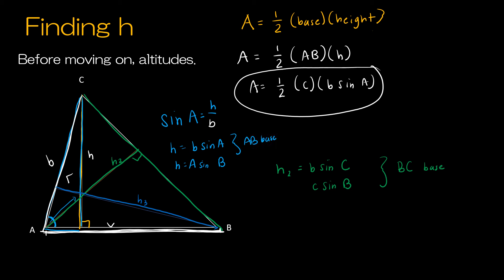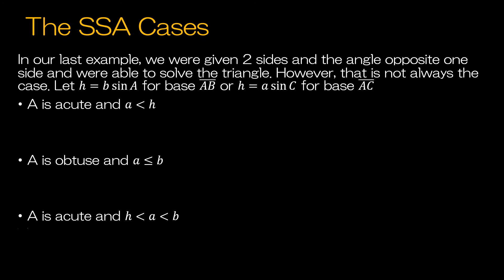Hopefully that gives us a good base to move forward. We're now going to look at some examples of side-side-angle that don't work, and of course finding the area of triangles. Going back to the example you tried on your own, we did have a side-side-angle case and everything worked perfectly. But that's not always going to be the case, so we're going to use H equals B·sin(A), or H equals A·sin(C), or whatever we need for the base we're using. We have three instances where it's not going to always work out as planned.